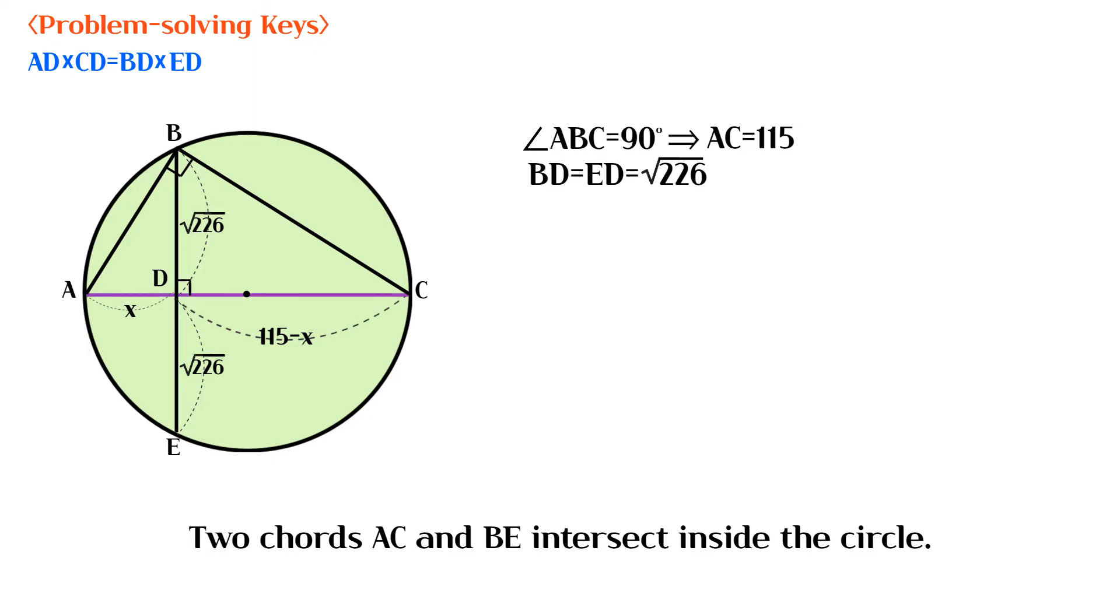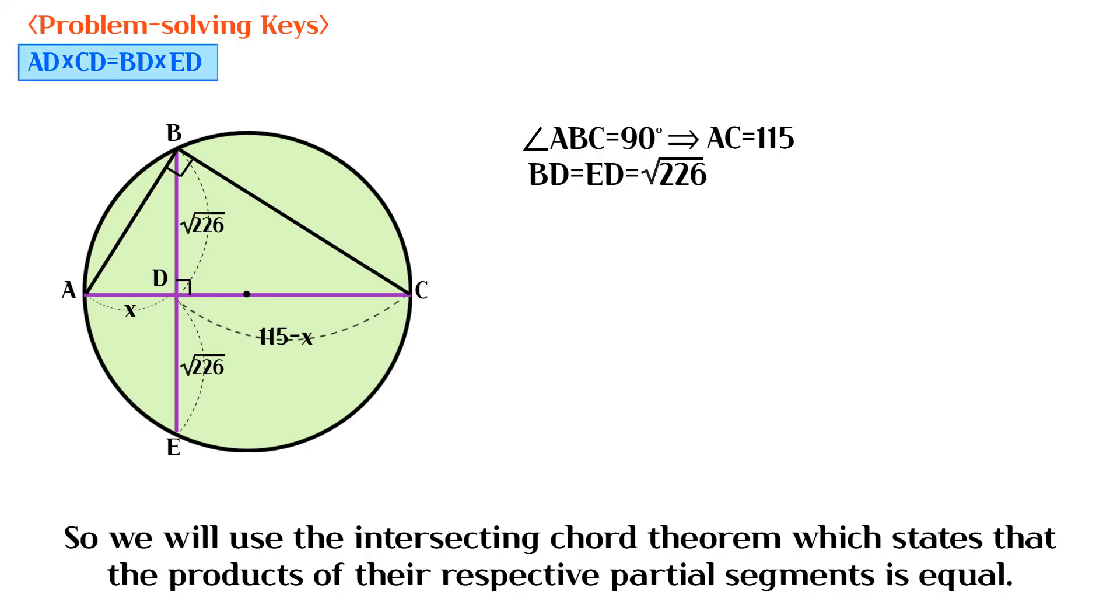Two chords AC and BE intersect inside the circle. So we will use the intersecting chord theorem, which states that the products of their respective partial segments is equal.